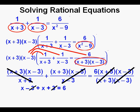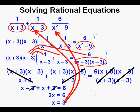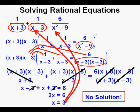We bring down what's left: x minus 3 plus x plus 3 on the left side equals 6 on the right side. The minus 3 and plus 3 cancel each other out on the left side, leaving 2x equals 6. Dividing both sides by 2, we get x equals 3. But is that our answer? Not so fast — if we substitute 3 back into the original equation, it makes both the second term on the left side and the right side of the equation undefined. That means this original equation has no solution.